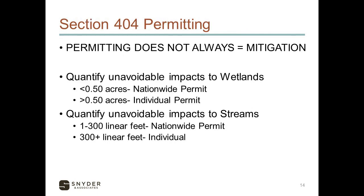Section 404 permitting does not always require mitigation. A permit may be required for a project and it might have mitigation, but it might not. What would trigger the need for mitigation is a tenth of an acre of wetland impact or 0.03 acres of stream impacts. For a nationwide permit, the impact must be less than a half acre. Once you're over that half-acre threshold, it bumps up to an individual permit, which takes longer and requires a lot of supplemental documentation. For streams, the 404 nationwide permitting threshold changed in 2021 from 300 linear feet to the same half-acre threshold as wetlands.